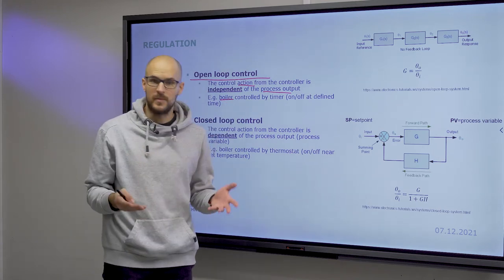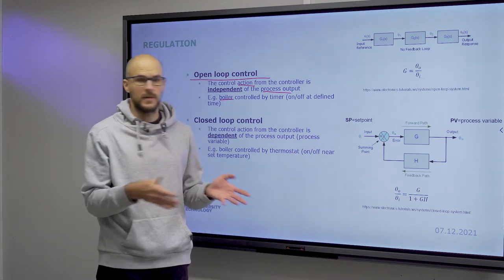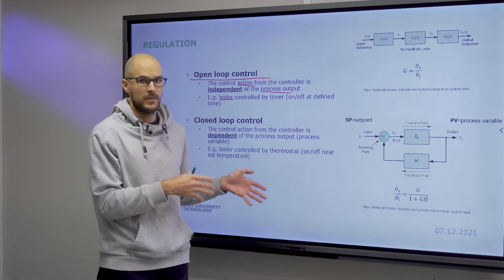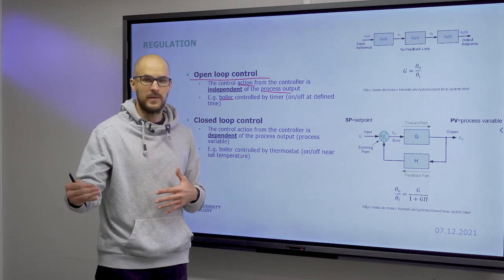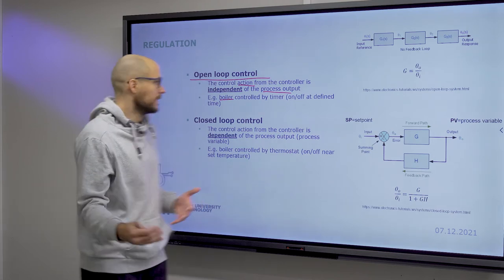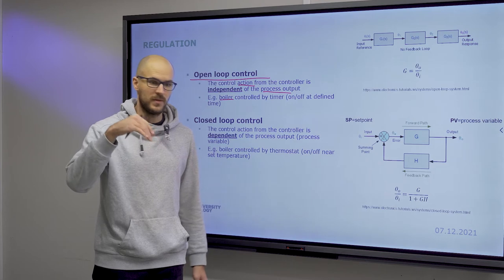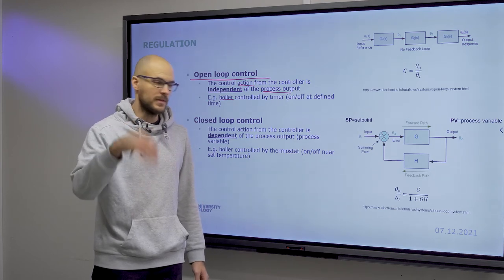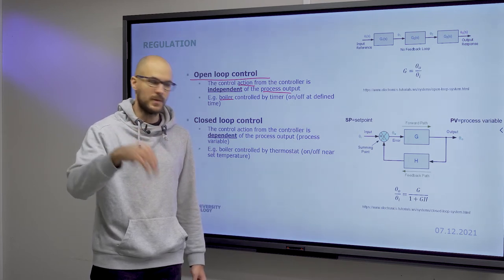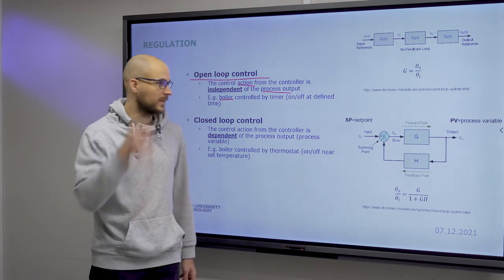If you want to control the temperature of a boiler, you have a heater that you turn on and off. That's your input. And the output is the temperature of the water inside the boiler. So an open loop control would mean that you have to set the process parameters in advance, and they don't change according to the process itself.